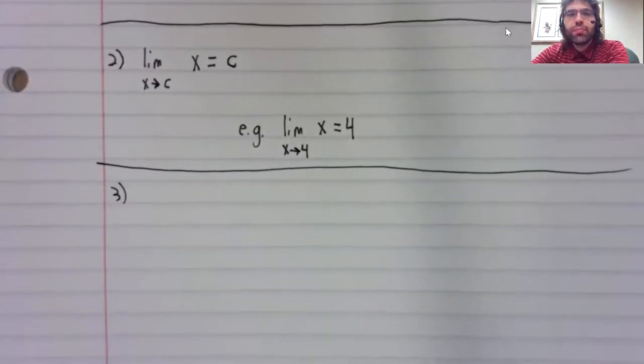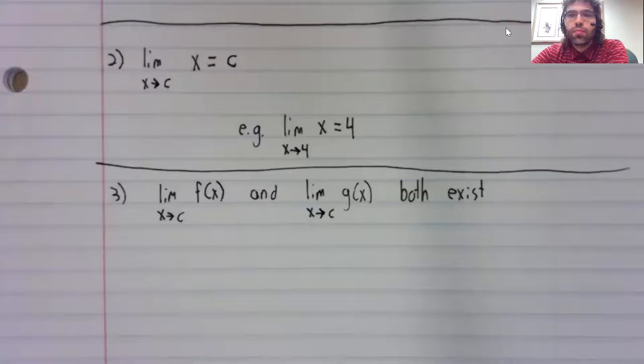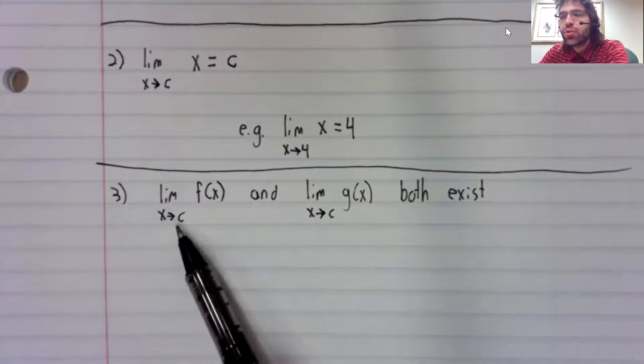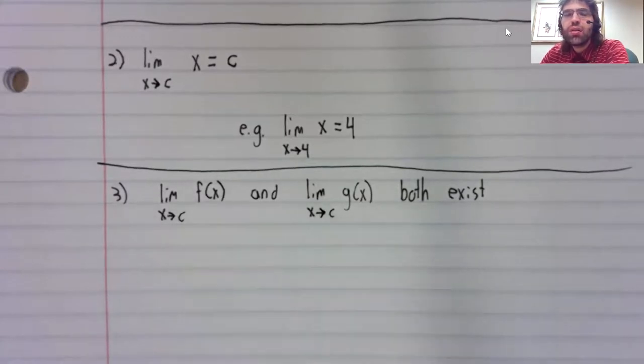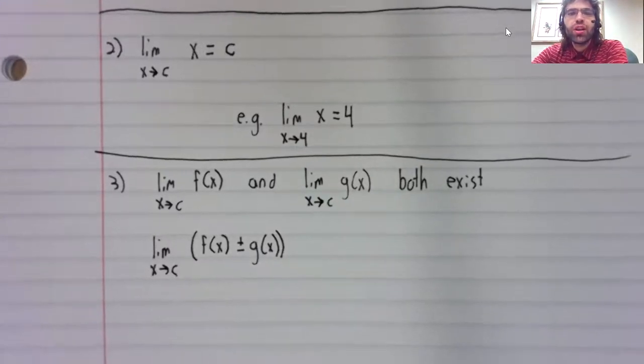Rule three is going to take a little longer to state. Suppose you have two functions. And both of these functions have a limit as x approaches c. So this c and this c are the same. Then the limit of a sum or a difference of these functions is the sum or the difference of the limits.